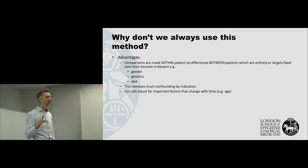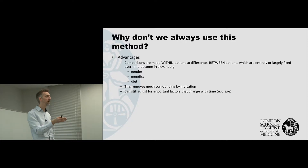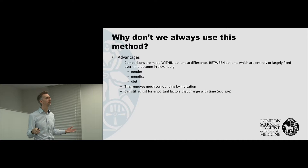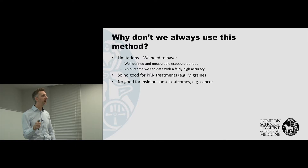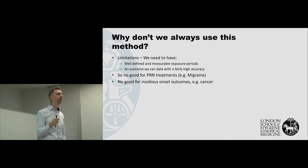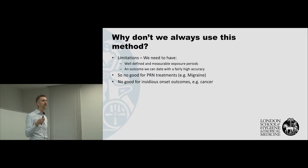Things that do change over time — typically things like age, or anything else measurable that we thought about in advance — we can adjust for those separately within our model. So we can adjust for other confounders that change over time as long as they're measurable. But the limitations can be quite major. We have to be able to define our exposure period well, and our outcome has to be well dated.